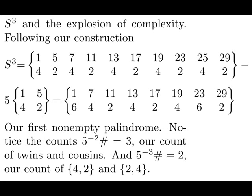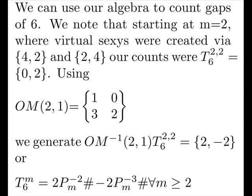Notice our counting works out perfectly. We're counting our twins exactly, our cousins, and our counts of 4 and 2 and 2 and 4. And we can use our algebra to count gaps of 6. We note that starting at M equals 2, virtual sexes were created by the 4, 2 and 2, 4s. Our counts were 0 and 2. That is, at M equals 2, we had no 0 counts of 6. At M equals 3, we had 2 counts of 6.